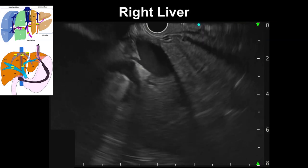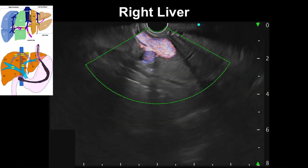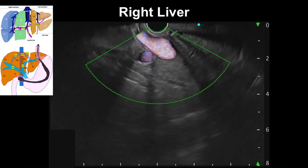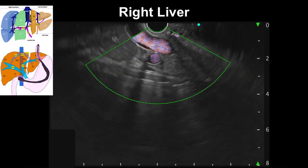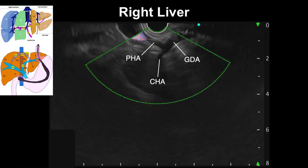With a counterclockwise torque, the portal vein can be followed to the hilum of the liver until the common hepatic artery is seen below. Applying a further counterclockwise rotation, the common hepatic artery can be seen crossing the portal vein and branching into the gastroduodenal artery on the right side of the screen and the proper hepatic artery on the left side of the screen.